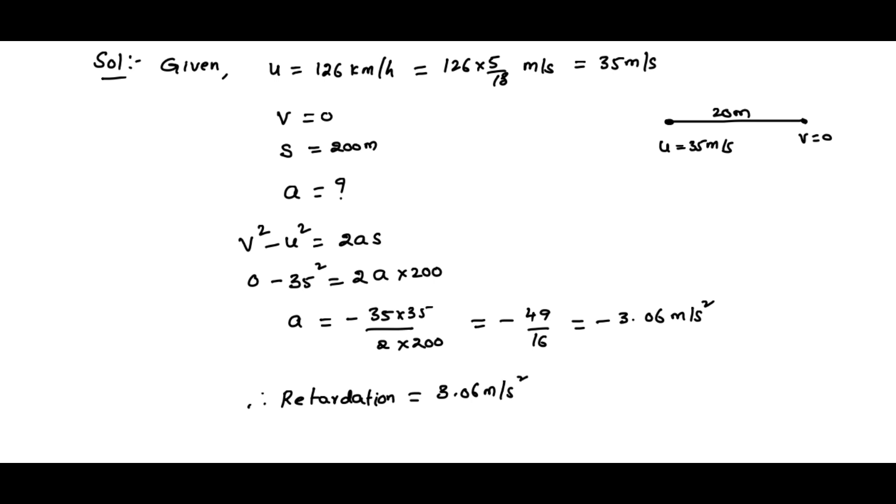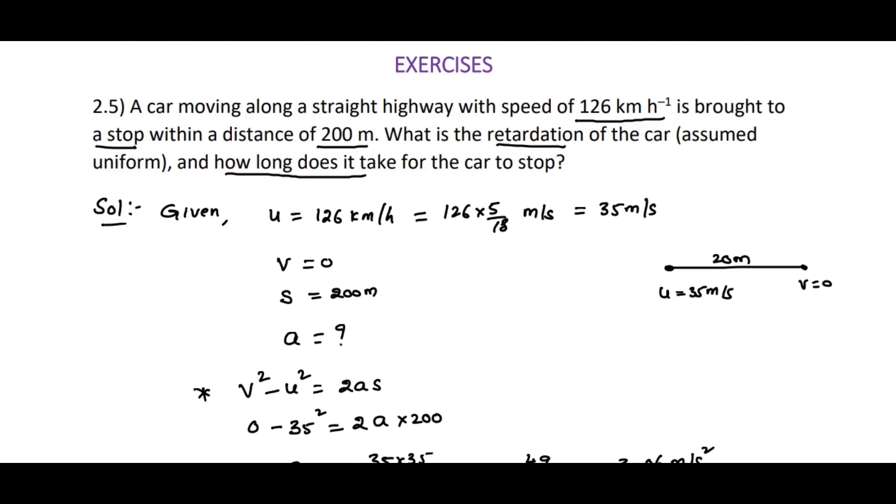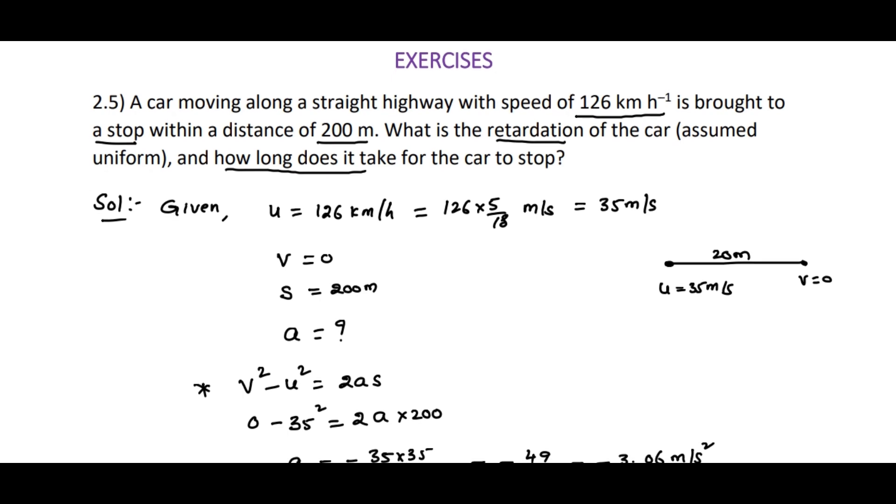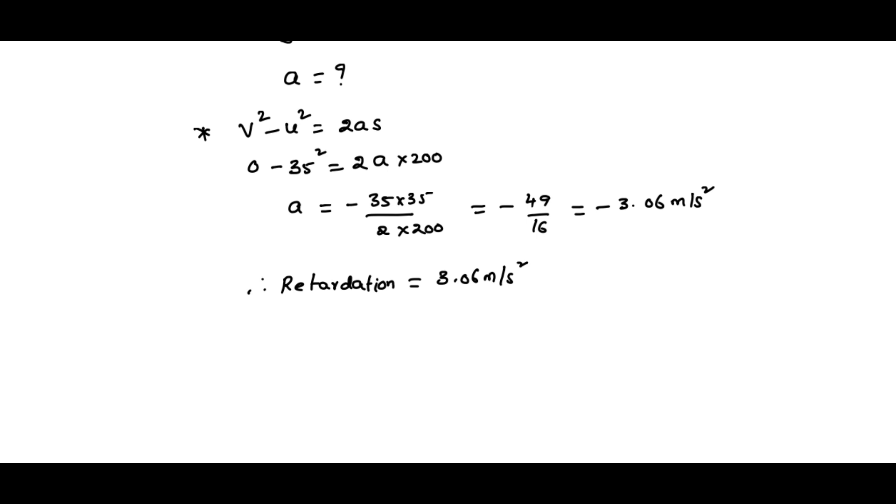And the second part is how long does it take for the car to stop? So we need to find time. Time t equals v minus u by a. As per the given data, you can also use s equals ut plus half a t squared, which is the simplest way to get the answer within less number of steps.